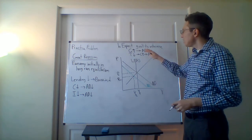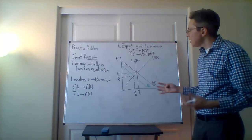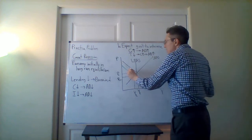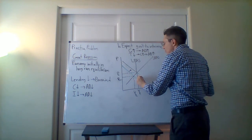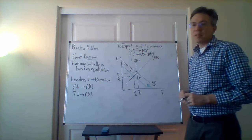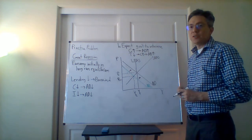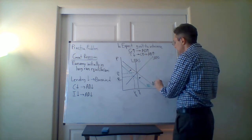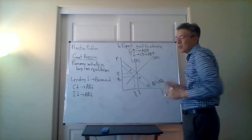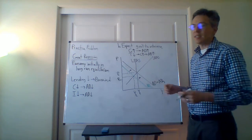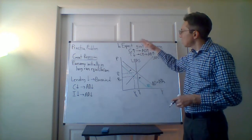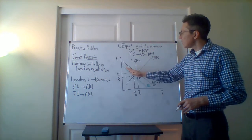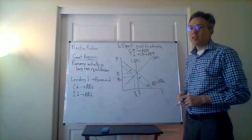So what would be the effect of these policies in terms of our situation here? The idea is that the government would be able to implement these policies such that the aggregate demand curve would actually shift to the right. It wouldn't be easy to shift it to exactly the right amount, but the idea is that this would counteract the effects from the lending decline.